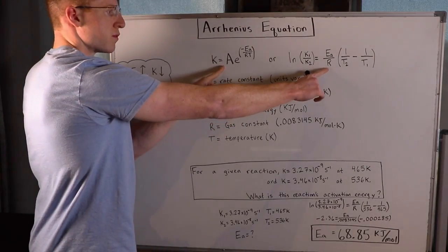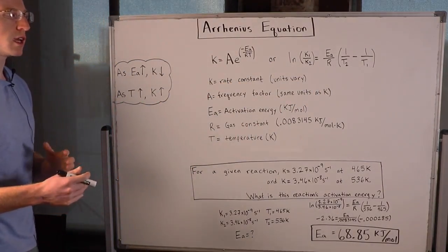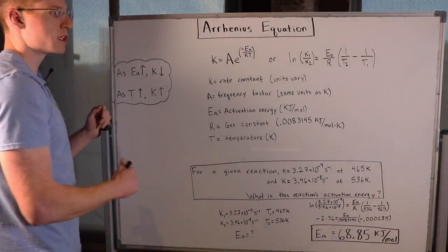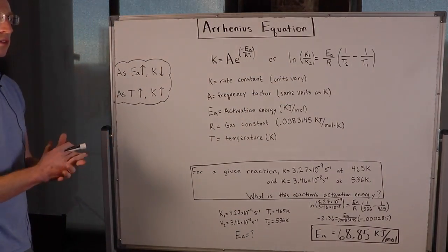These are two important forms of the Arrhenius equation that you should memorize. K is the rate constant, and the units of the rate constant vary based on the reaction.